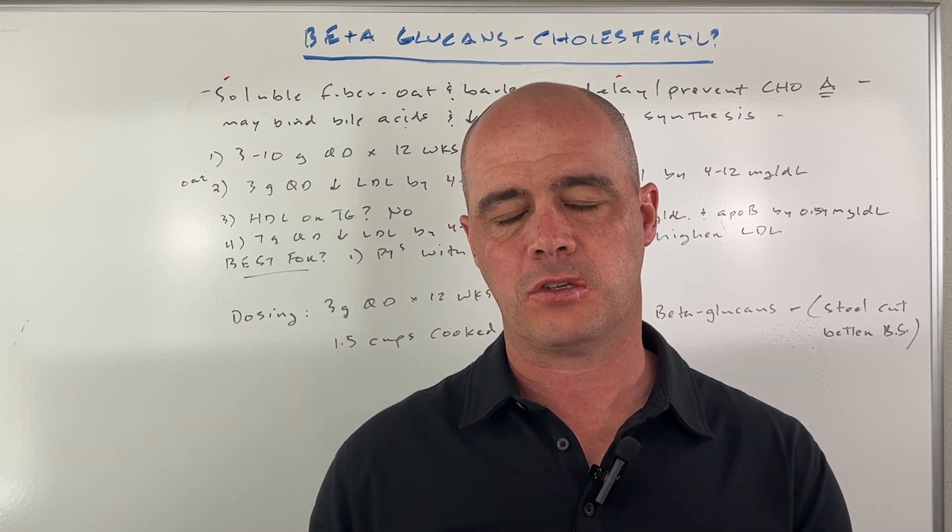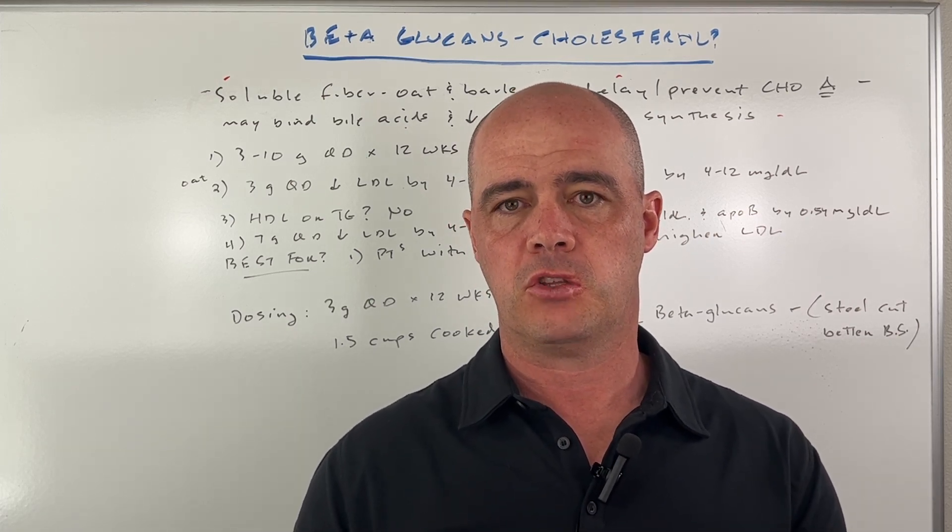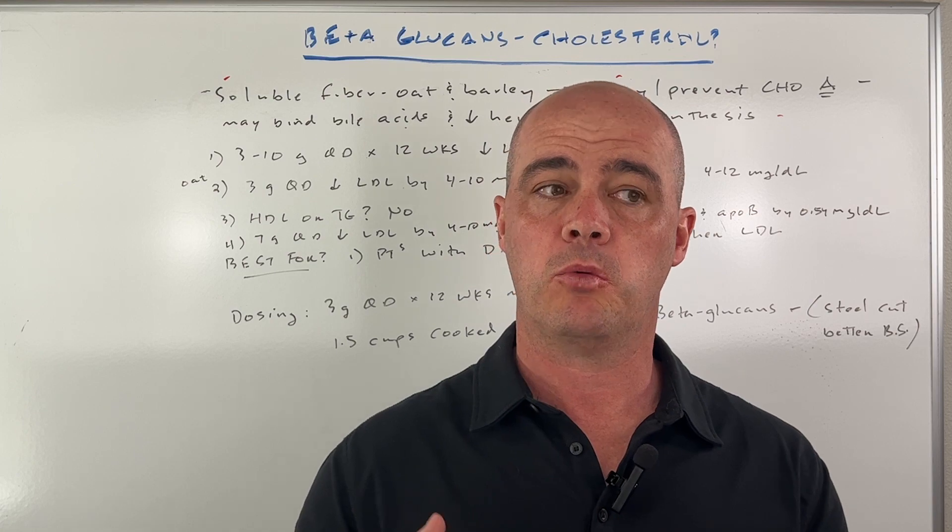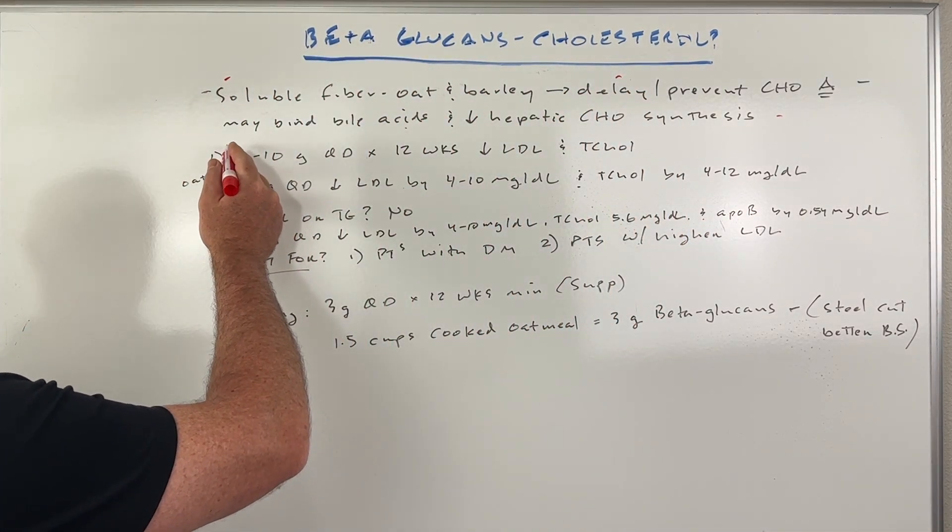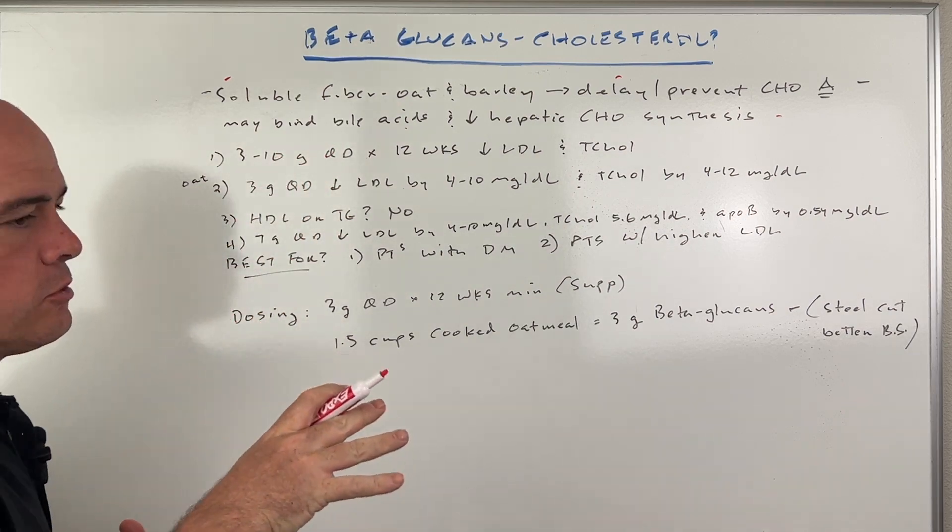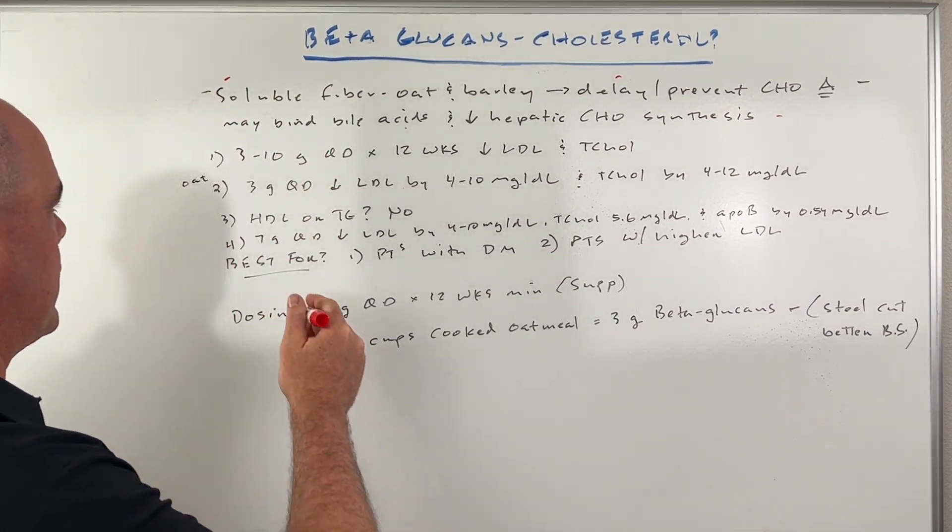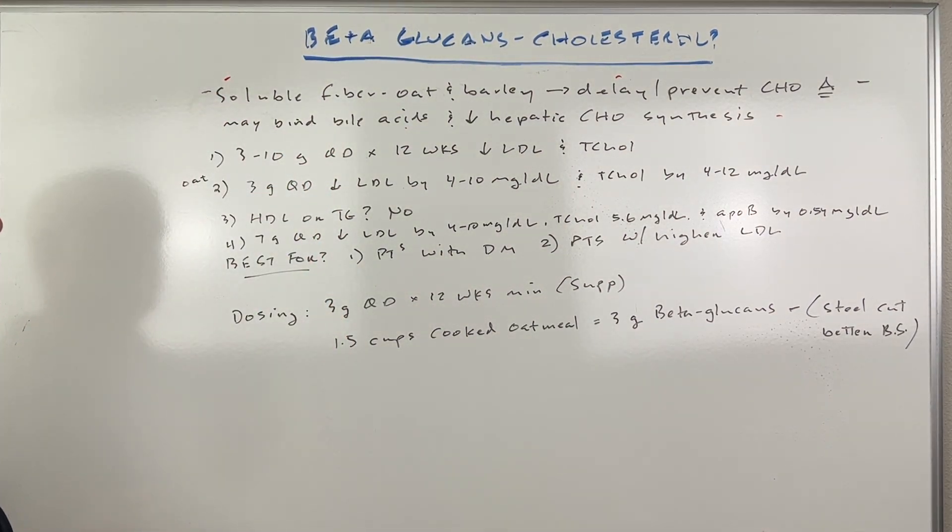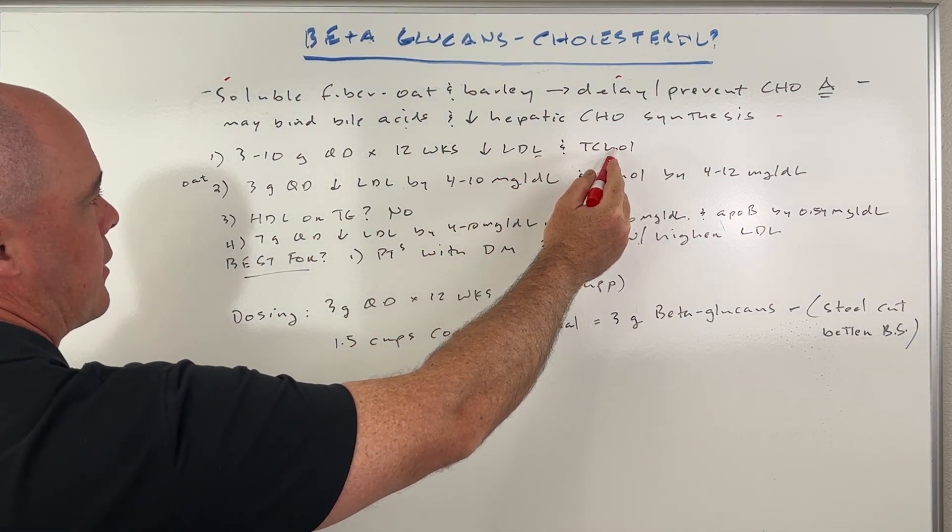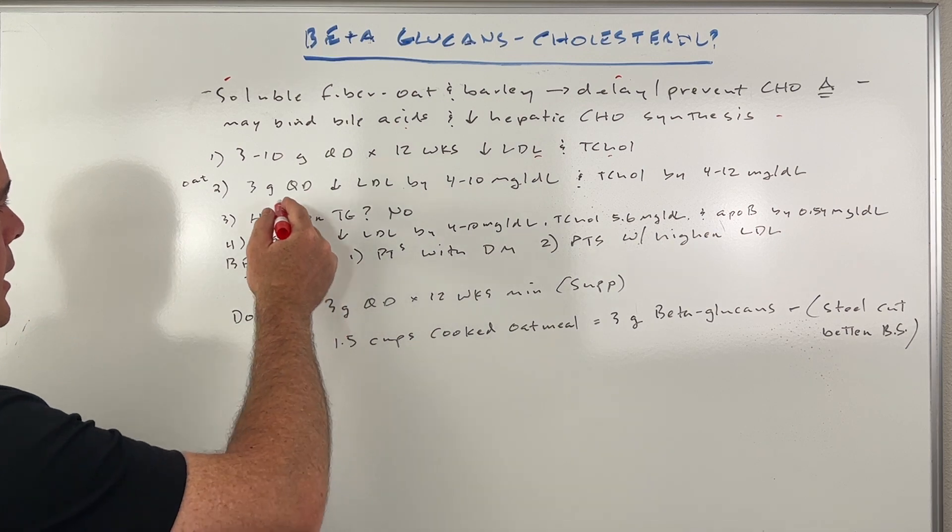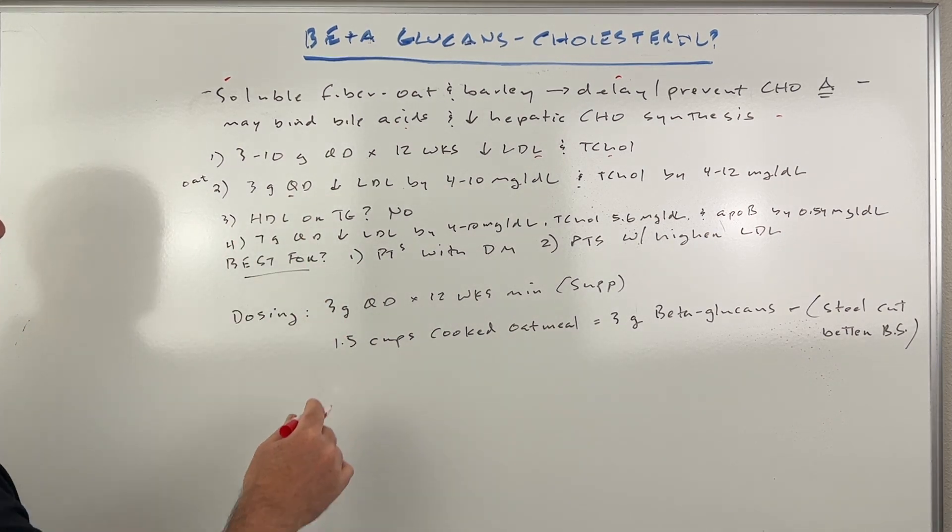Now I want to point out, it's not a huge decrease that you're going to see, but we are seeing some decreases in a couple of studies. First of all, there's a couple of them that used more of an oat-based beta glucan, taken three to ten grams per day for 12 weeks. They did see a decrease in LDL and total cholesterol, just as low as only three grams a day.